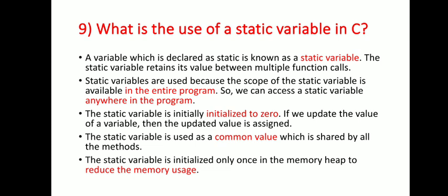Next question: what is the use of a static variable in C? A variable declared as static is known as a static variable. The static variable retains its value between multiple function calls. Static variables are used because their scope is available in the entire program, so we can access a static variable anywhere in the program. The static variable is initially initialized to zero.